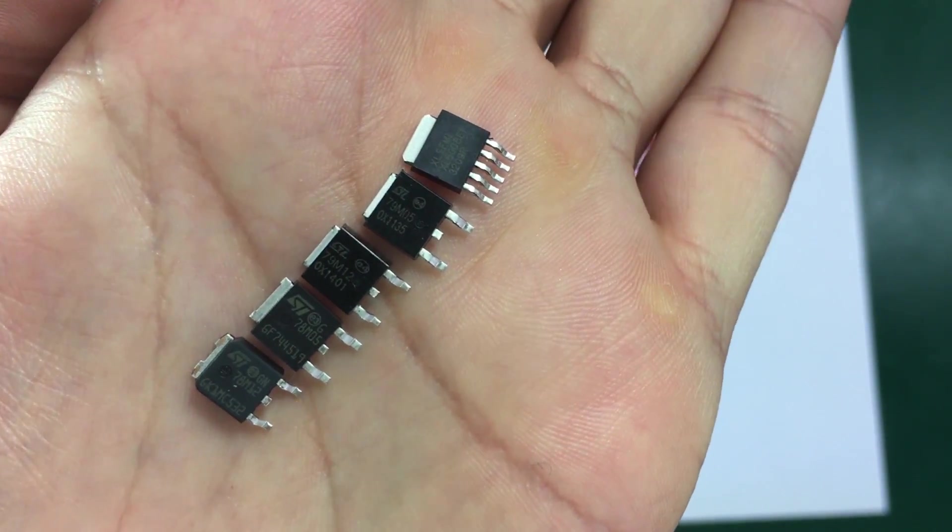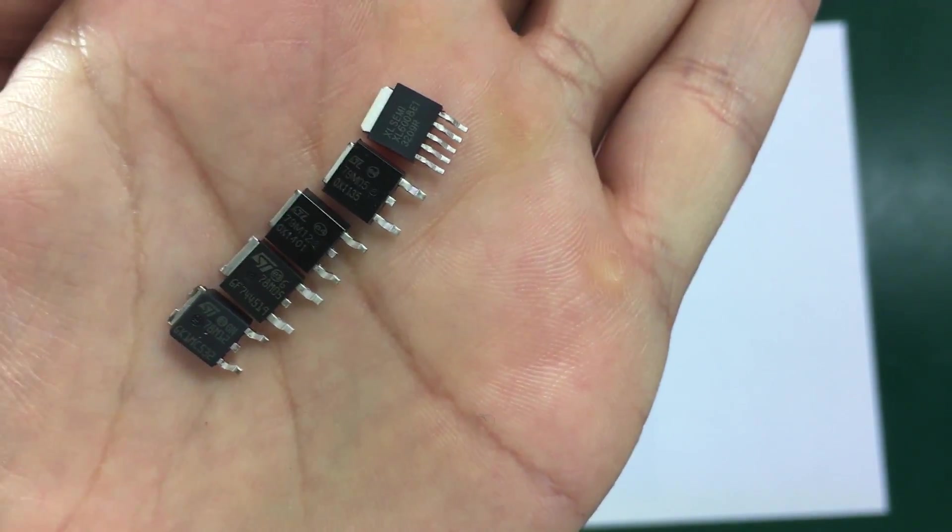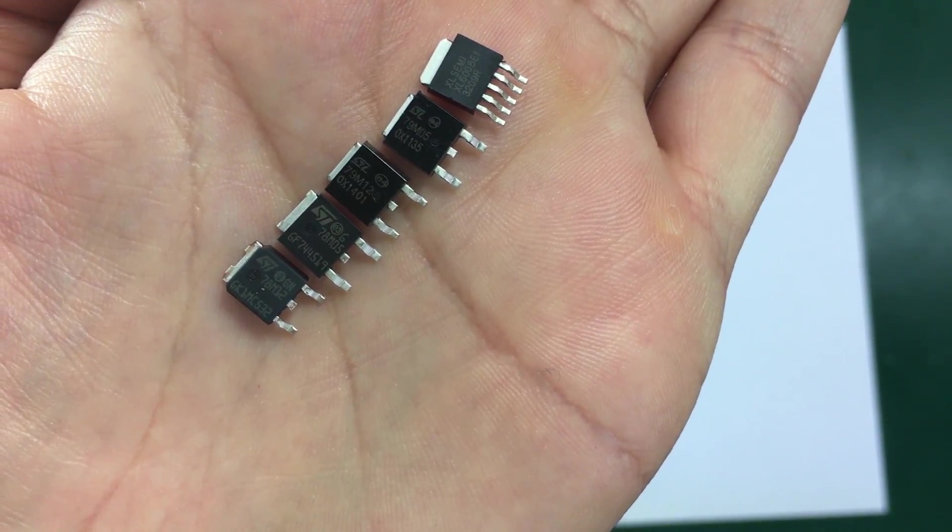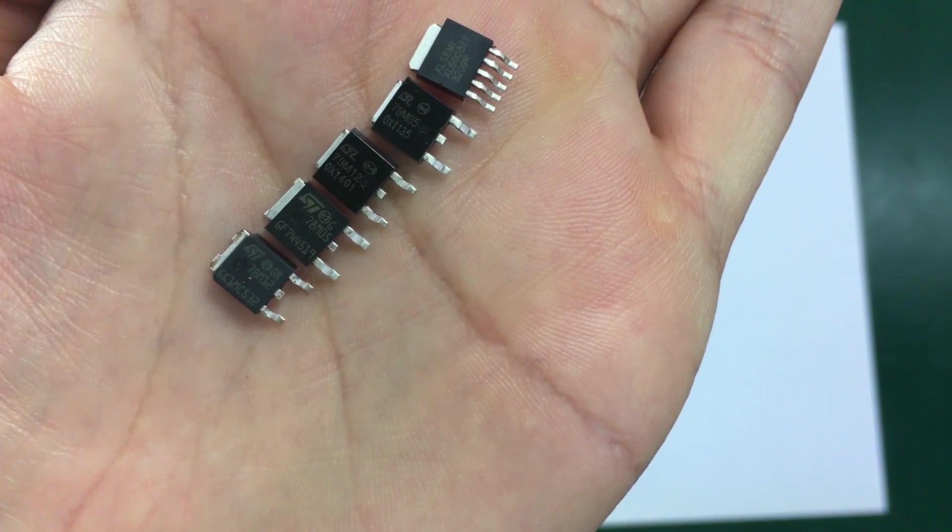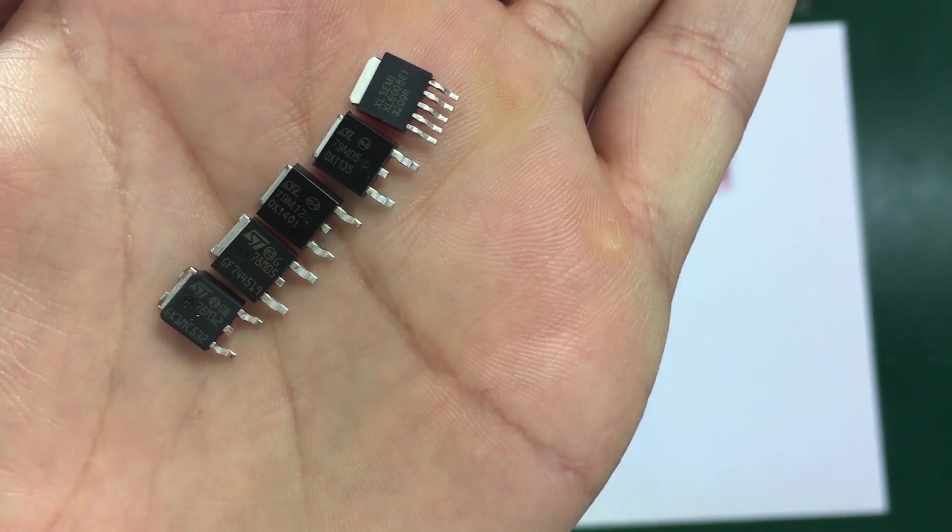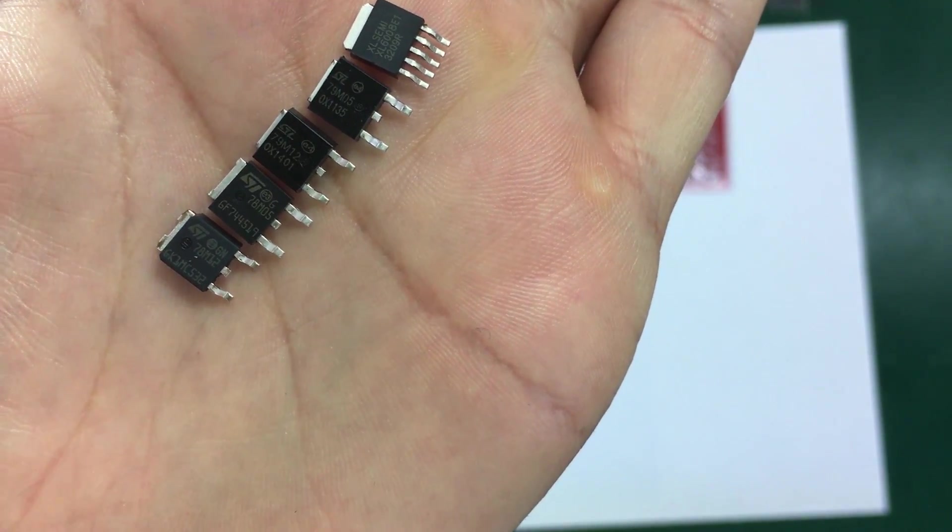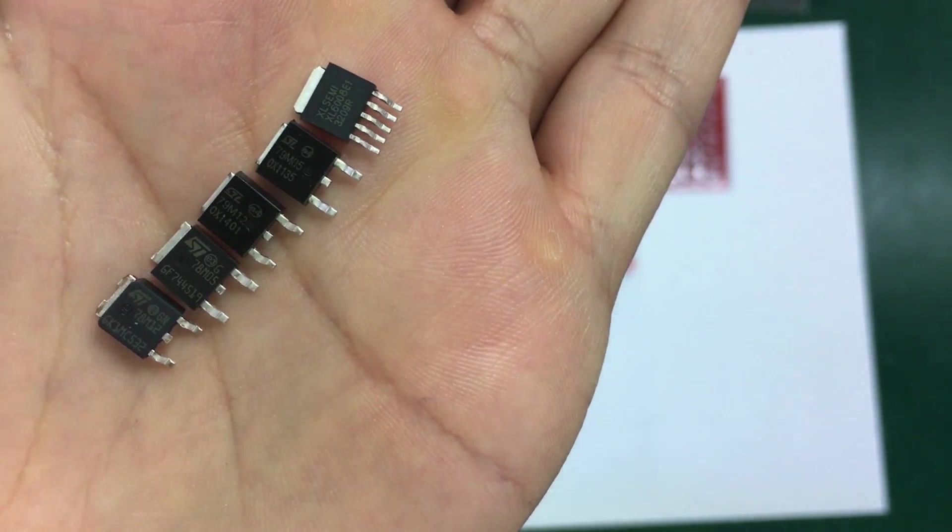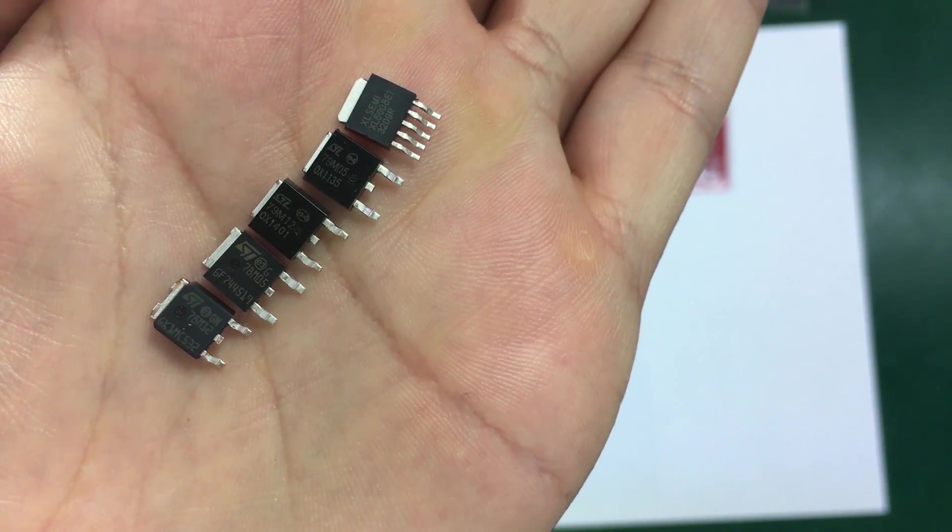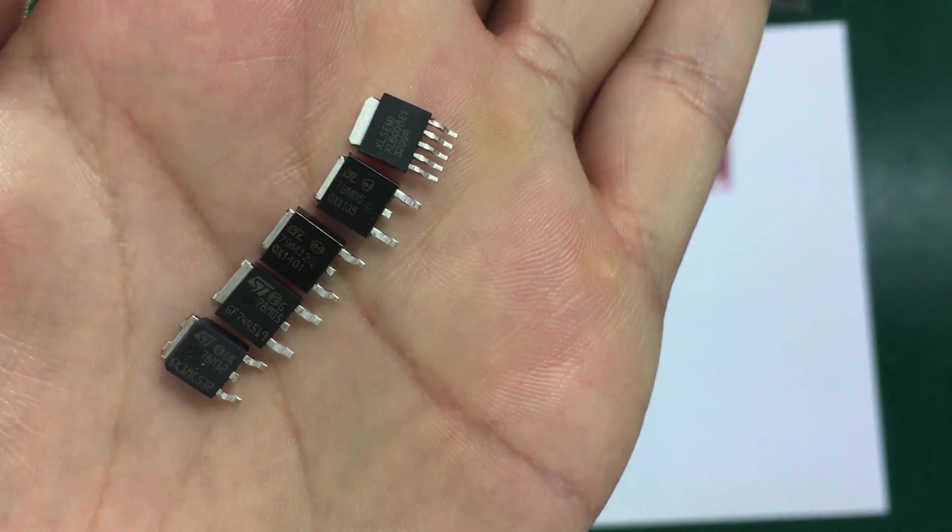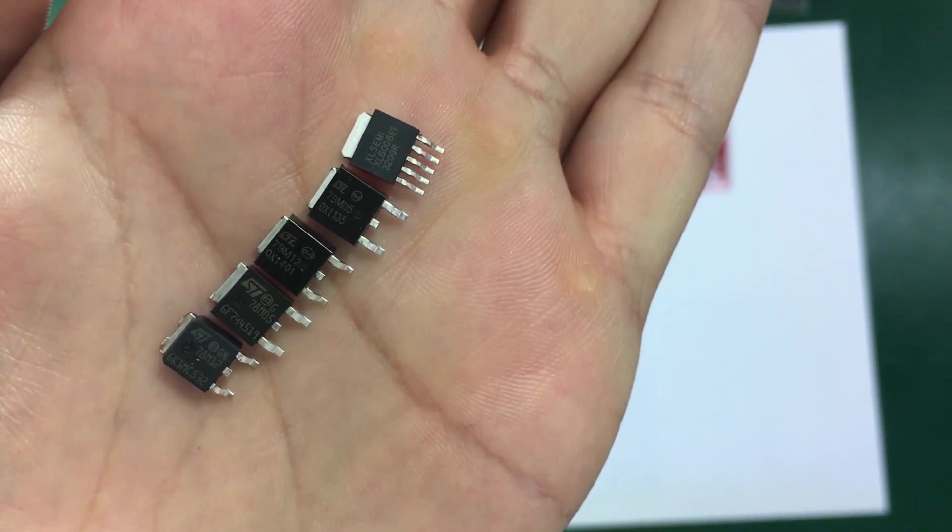So each of these SMD packages has a number written and we can see starting from the left we have a 78M12 then a 78M05. So these two starting with 78 are positive voltage regulators for 12 and 5V. And the next ones are 79M12 and 79M05. Those are negative voltage regulators for 12 and 5V. And lastly we have the XL6008 which is a switch mode regulator.